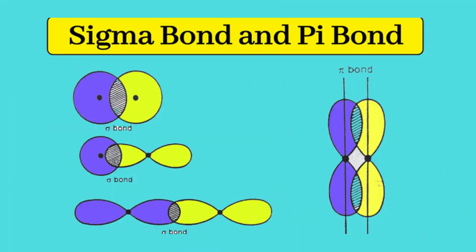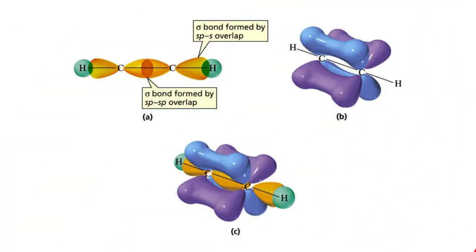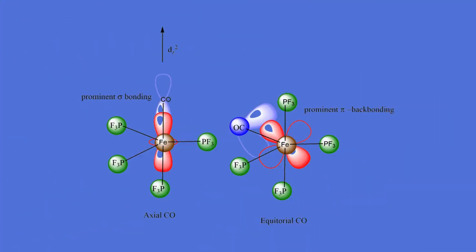This theory also introduces us to the concepts of sigma and pi bonds, where sigma bonds involve direct overlap and are generally stronger, while pi bonds are formed by sideways overlap.